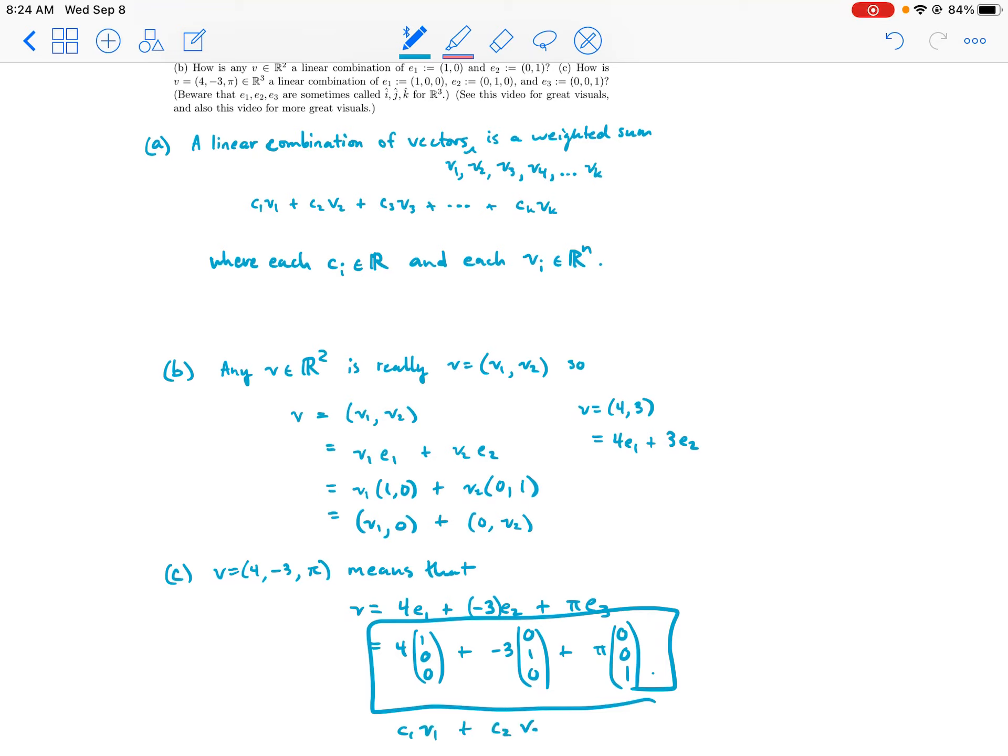And so, I mean, an example of a linear combination is here. Here is, you know, c1·v1 + c2·v2 + c3·v3, except actually these vectors have special names. They're called e1, e2, and e3—the vectors that point in the unit direction in the first, second, and third dimensions.